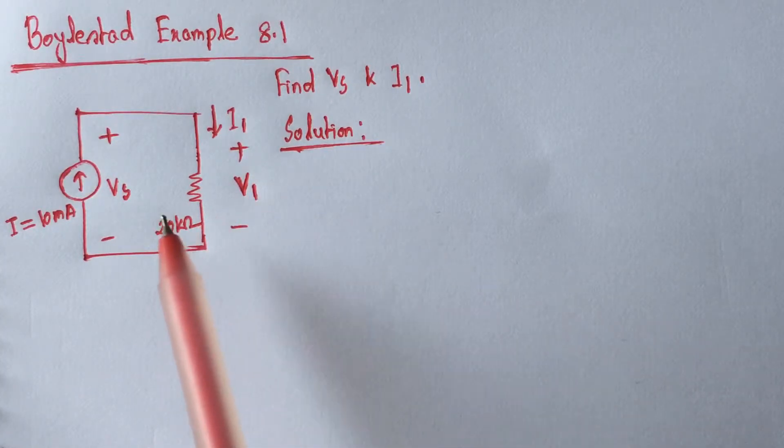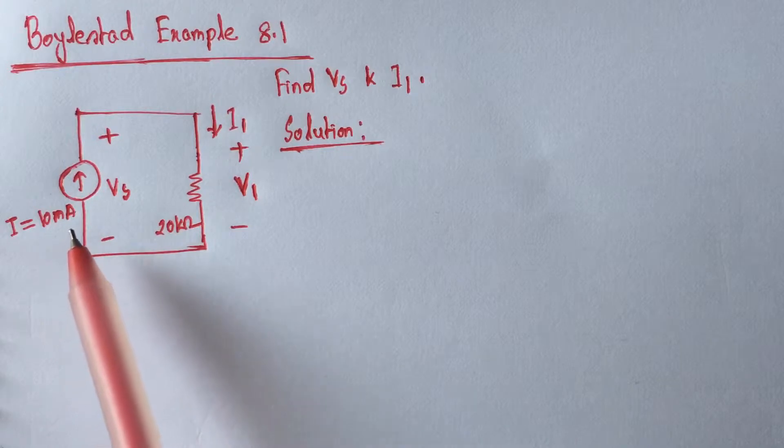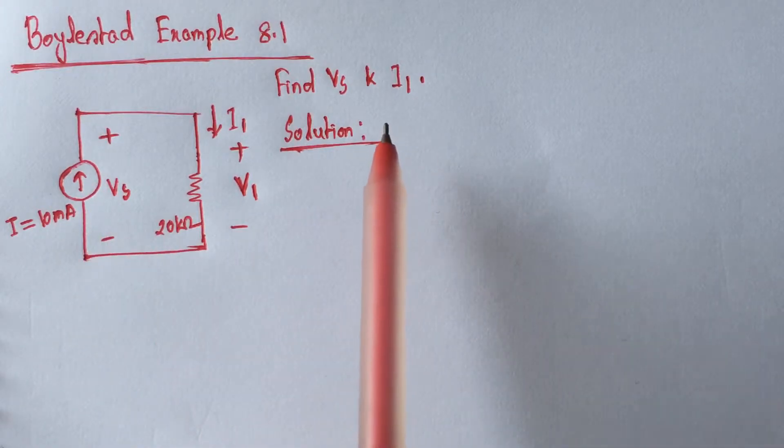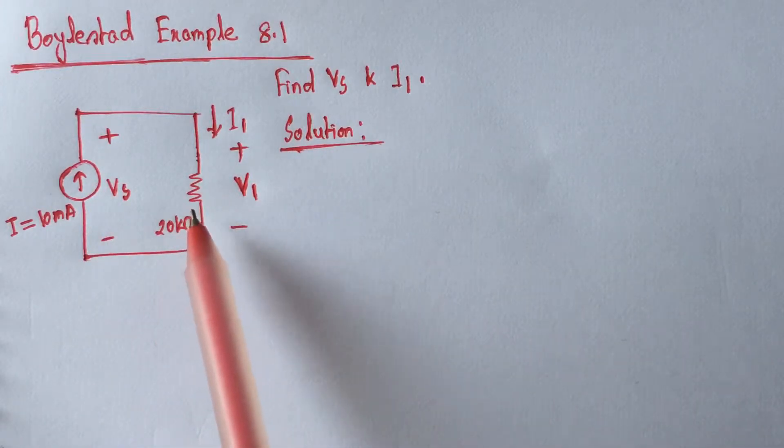Here we have to identify the voltage Vs across the current source and the current I1 which is flowing through the 20 kohm resistance.